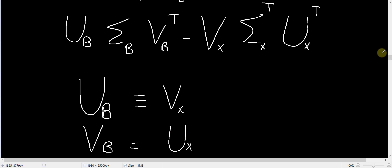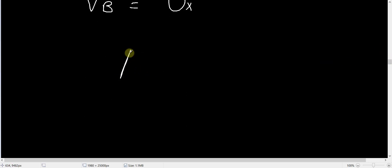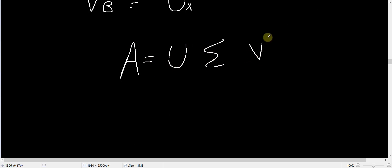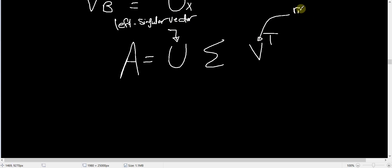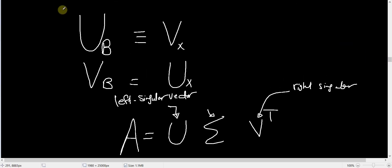Finally, there is one naming convention to mention: if A equals U Σ V^T, then the U vectors are called the left singular vectors, and the V vectors are called the right singular vectors, because they come on the right of Σ. This means the left singular vectors of matrix B are equal to the right singular vectors of B^T, and the right singular vectors of B are equal to the left singular vectors of B^T, for a general matrix B.